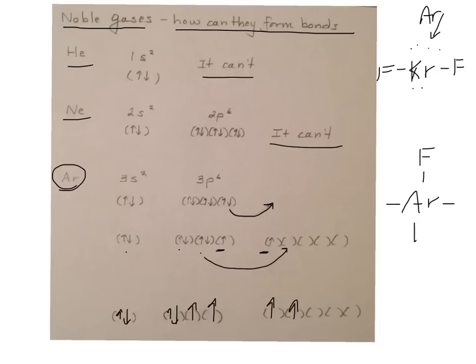We'll do some fluorines and then two lone pairs around the middle. And this is where you get your square planar geometry.